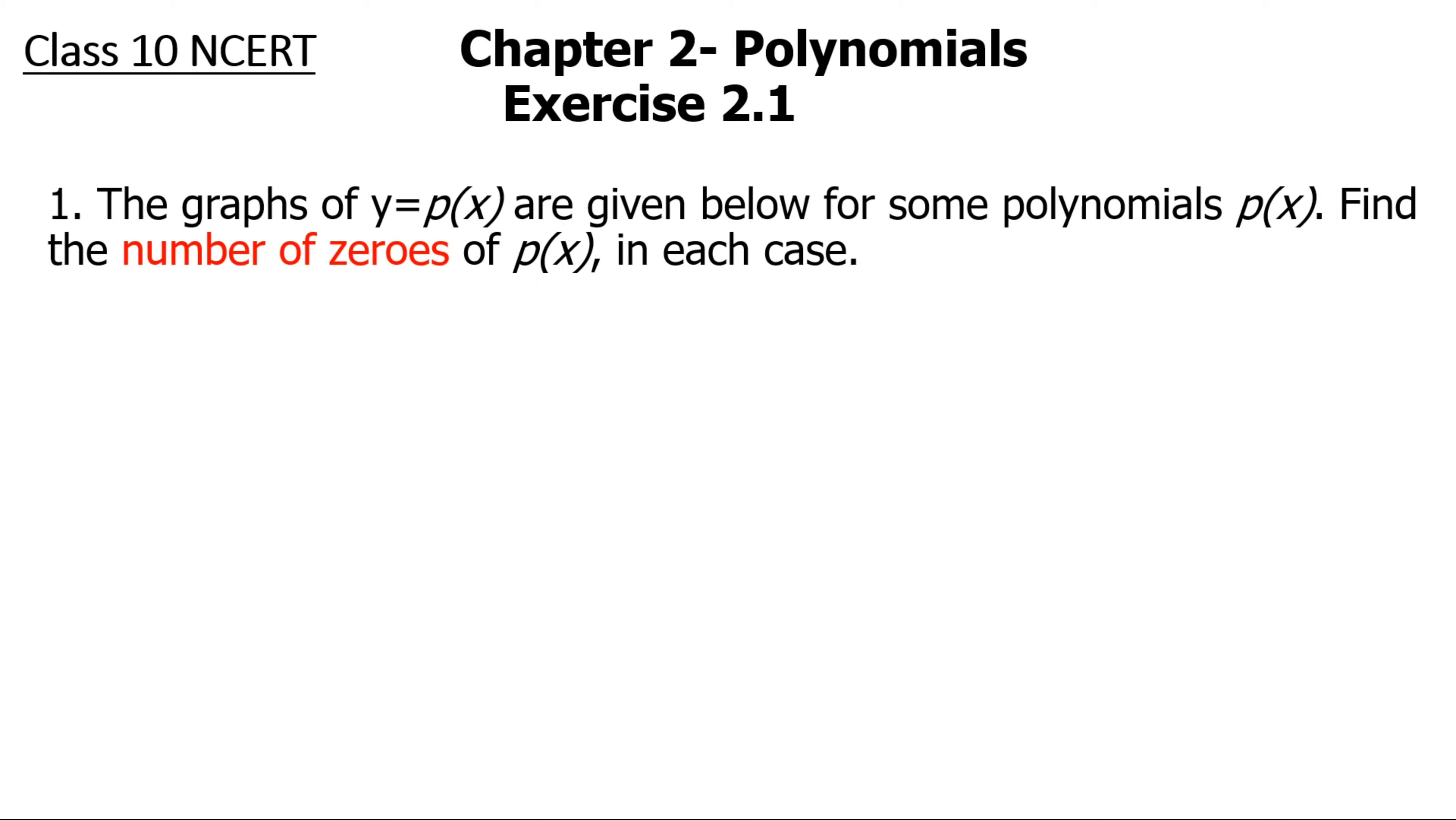Hello everyone, in this video we are going to take a look at how to find zeros of a function from a given graph. Now the question is: the graphs of y equals p(x) are given below for some polynomial functions p(x). So we have got some polynomial functions and the graphs are given for that. Find the number of zeros of p(x) in each case. So we need to find out how many zeros each of these polynomials have.